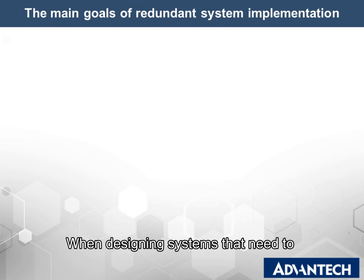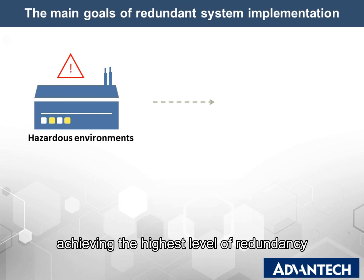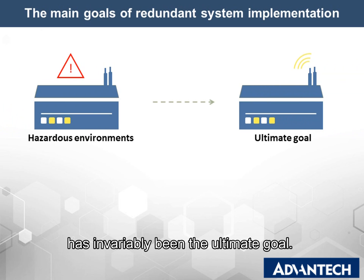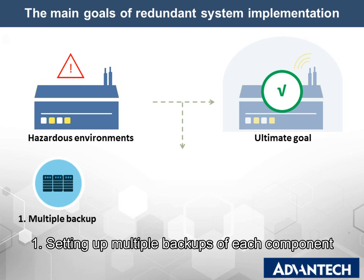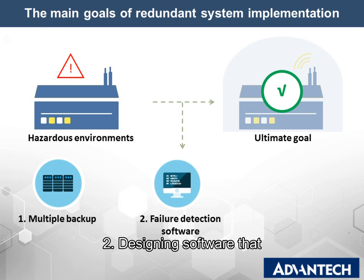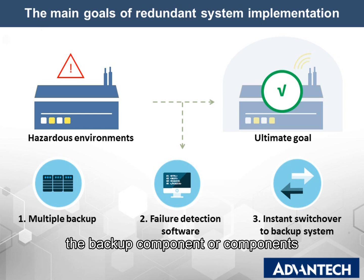When designing systems that need to operate in hazardous environments, achieving the highest level of redundancy has invariably been the ultimate goal. The following are generally the main goals of redundant systems implementation: first, setting out multiple backups of each component; second, designing software that detects failure of the main system; third, performing switchover to the backup component or components.